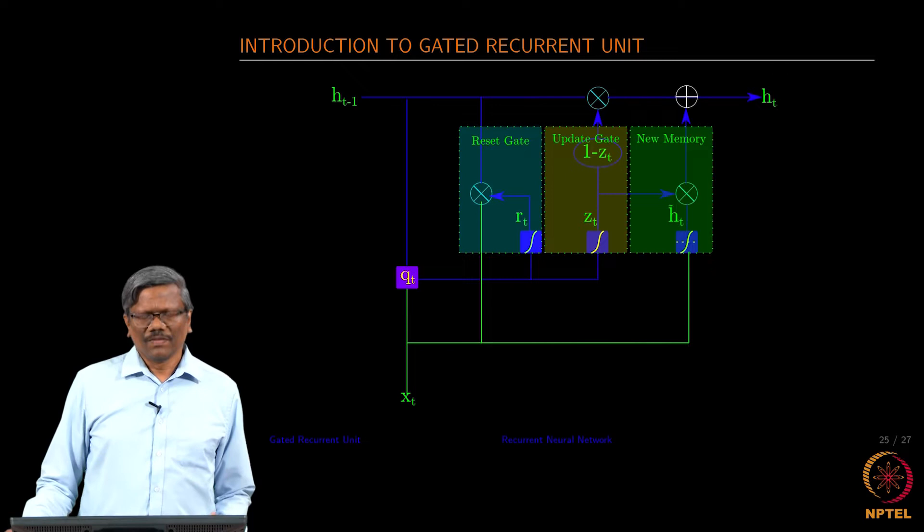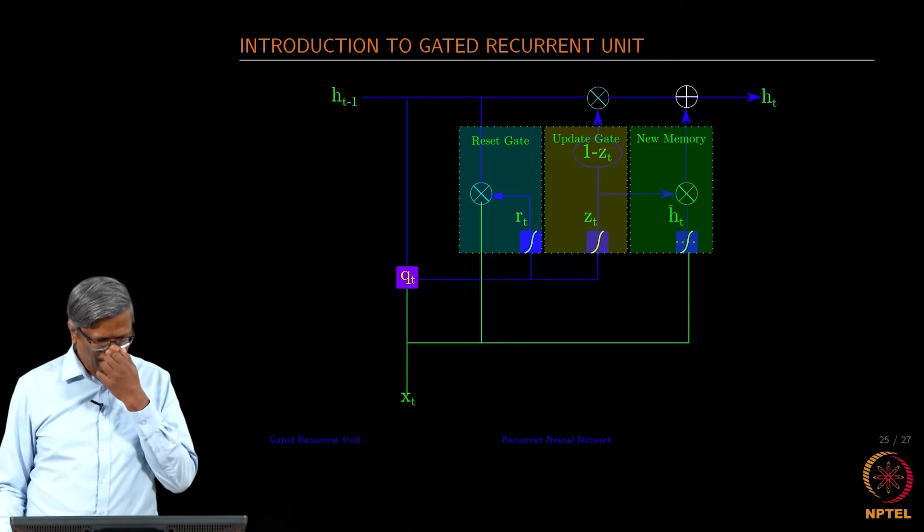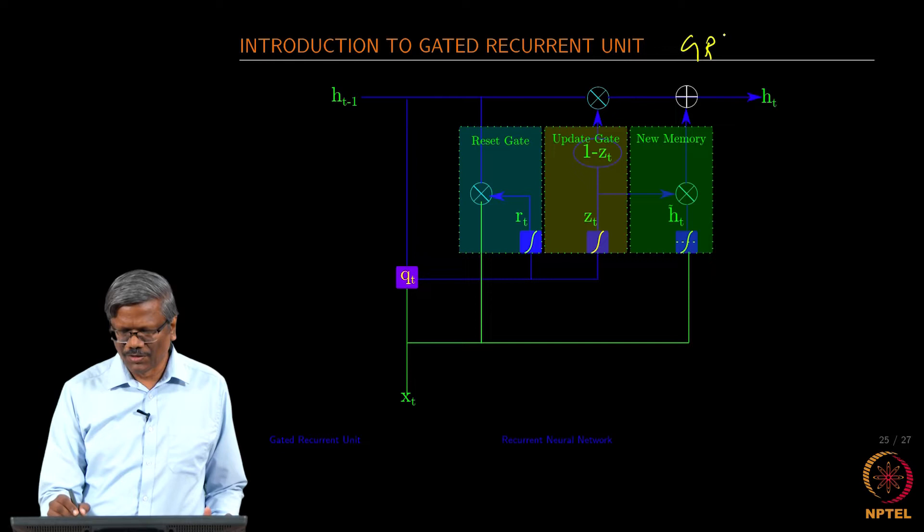Let us look at another interesting variation to the recurrent neural network. This is called Gated Recurrent Neural Network or Gated Recurrent Unit. We usually call it as GRU.